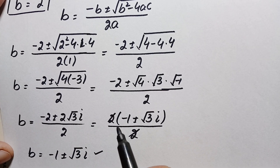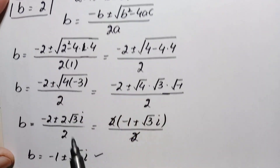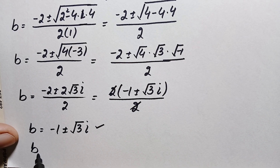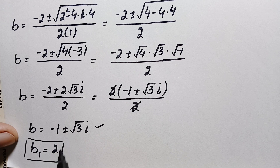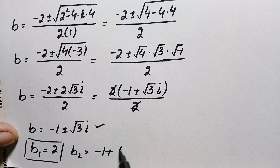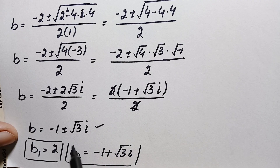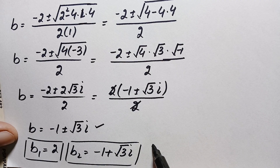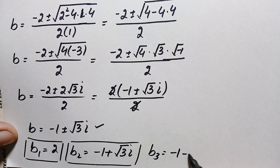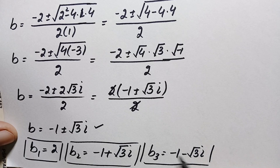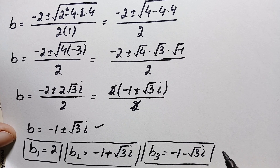So we have two possible complex values of b. In total, this problem has three solutions. The first value is b₁ equals 2 (the real solution). The second solution is b₂ equals minus 1 plus square root of 3 times i, and the third solution is b₃ equals minus 1 minus square root of 3 times i (both complex solutions).